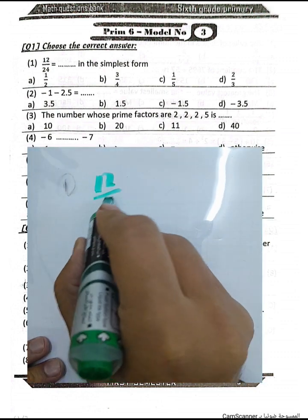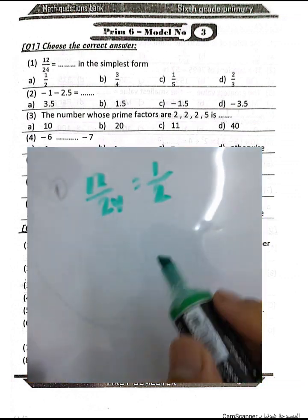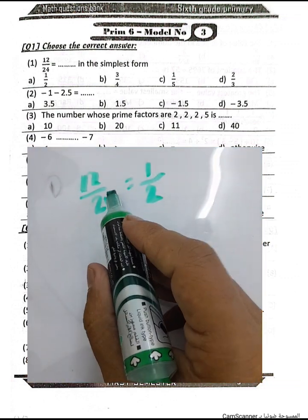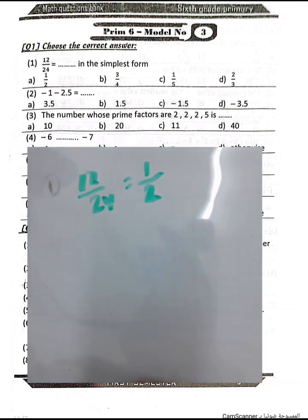Question number 1: 12 over 24. We must simplify this fraction by dividing by 12 in the numerator. 12 is half of 24, so the result will be one half. 12 over 24 equals one half because 12 divided by 12 equals 1, and 24 divided by 12 equals 2.